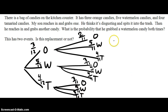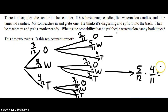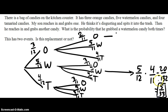So we're looking at the probability that you grab watermelon both times — we want this branch times this branch. So we have five over twelve times four over eleven. That gives us twenty over one hundred thirty-two, which simplifies to five over thirty-three. Either one of those answers is fine. So I hope you learned a thing or two. Toodles!